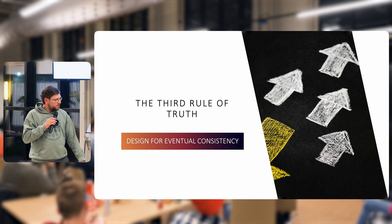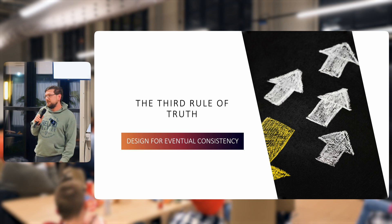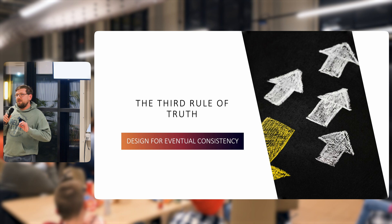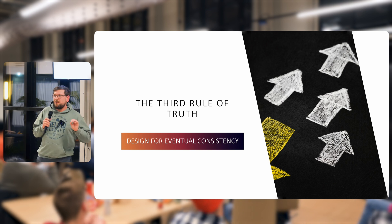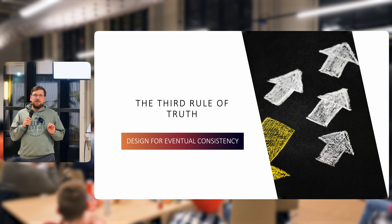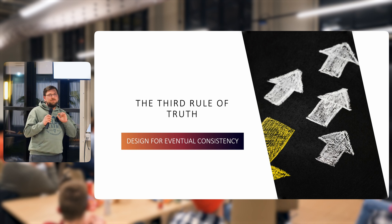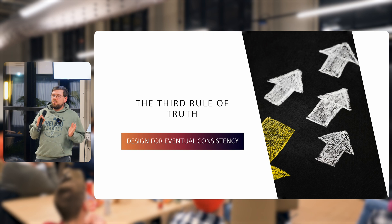The third rule of truth is design for eventual consistency. This is not a very complicated thing when you're building an API. It's basically just recognize that whenever you get a value from the cache, it may not be the actual value in the database. It might be lagging behind by a few milliseconds or a few hundred milliseconds or whatever.